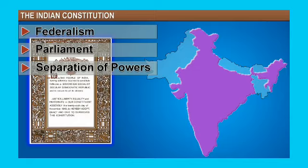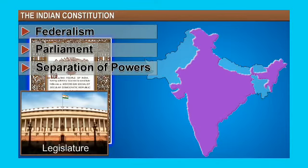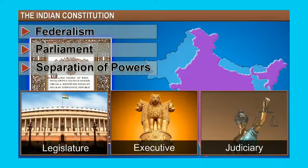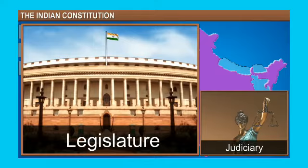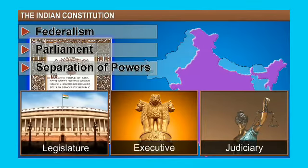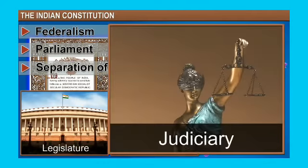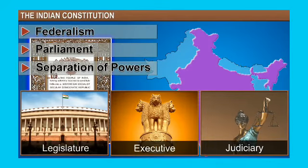Next is separation of powers. There are three separate powers: legislative, executive, and judiciary. In the legislature, representative people are there making laws. In the executive, appointed officers like IAS and IPS serve the people. In the judiciary, courts make decisions about whether all laws are applicable and useful to the people. This is the separation of powers.